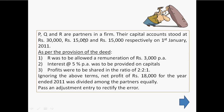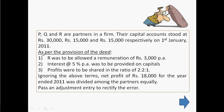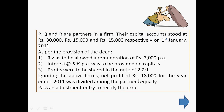P, Q and R are partners in a firm. Their capital accounts stood at Rs 30,000, Rs 15,000 and Rs 15,000 respectively on 1st January 2011. As per the provision of the deed, R was to be allowed a remuneration of Rs 3,000 per annum. Interest at the rate of 5% per annum was to be provided on capitals. Profits were to be shared in the ratio of 2 to 1. Ignoring the above terms, net profit of Rs 18,000 for the year ended 2011 was divided among the partners equally. Pass an adjustment entry to rectify the error.